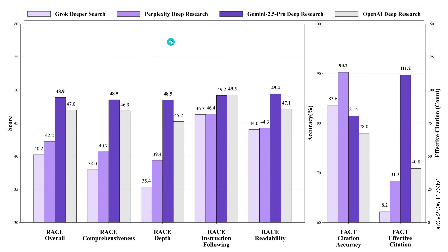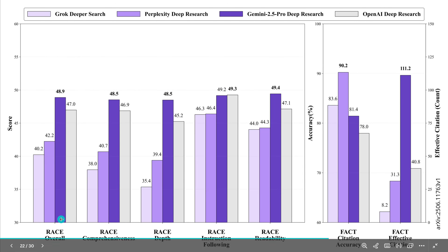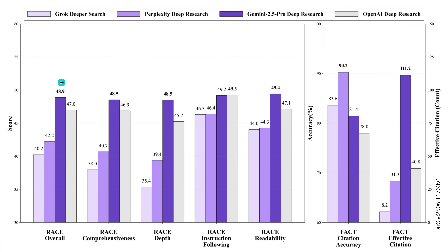Now let's look at the results. They tested four deep research agents: Grok (light version), Perplexity, Gemini 2.5 Pro (preview — not the new final version published that day), and OpenAI. Looking at RACE overall and the detailed breakdown, this dark violet — Gemini 2.5 Pro — kind of dominates. OpenAI comes close, but Gemini dominates the RACE benchmark.